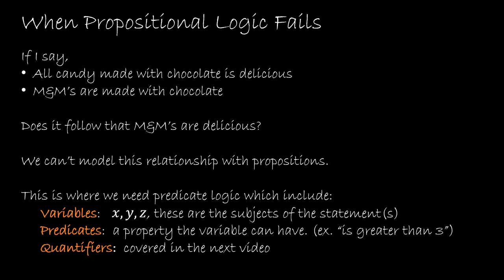So we've been working very hard at understanding propositions. We know all the connectives, however, if I were to say all candy made with chocolate is delicious, M&Ms are made with chocolate, does it follow that M&Ms are delicious? Now you might say yes, you might say we don't have enough information, but the point is I can't model this relationship with propositions that I already know. So this is where we need predicate logic.